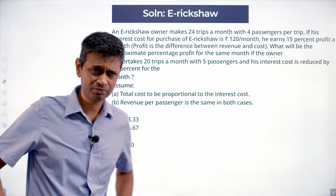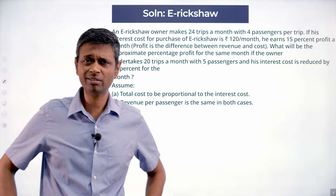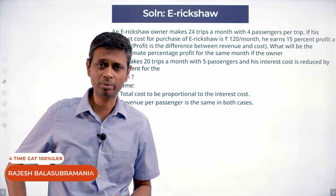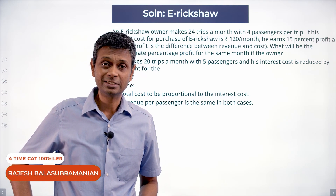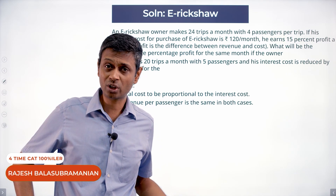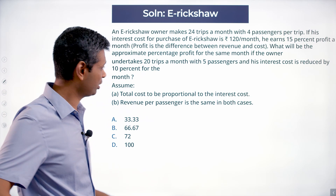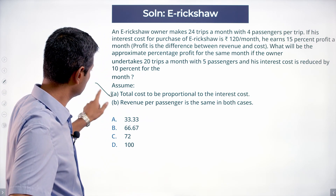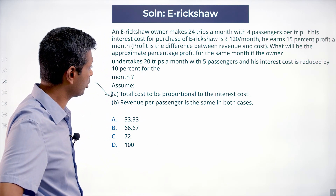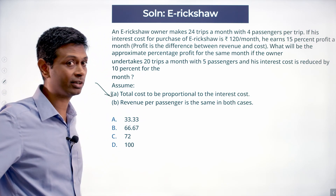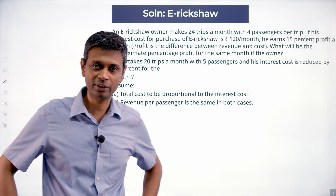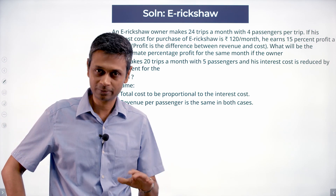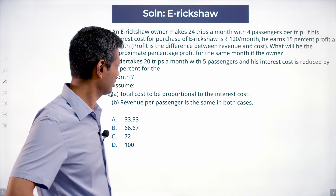When I read this, I was very surprised. Interest cost is usually a small component of the cost — we are reducing that small component, which might not change your cost structure at all. But very interestingly, this assumption comes in: the total cost is proportional to the interest cost. If interest cost is cut by 10%, that means all costs are cut by 10%. That's a given.